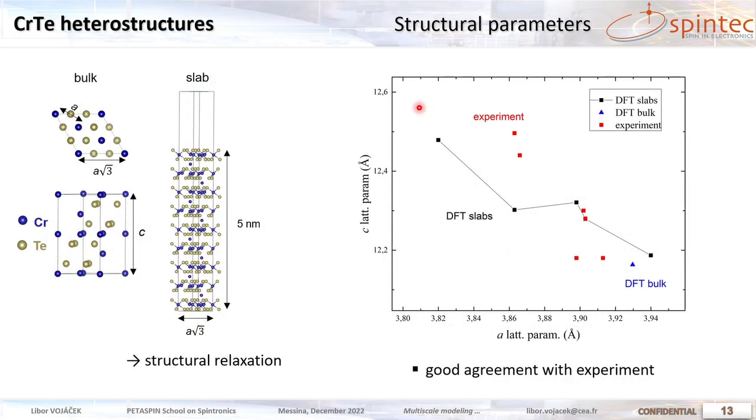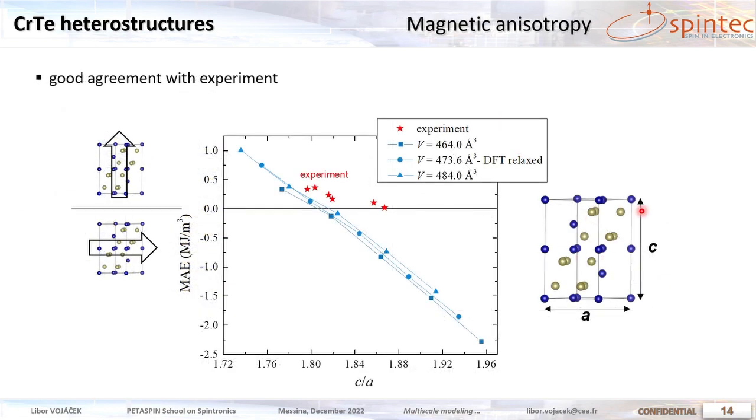First we construct a slab which is thicker. So here in X and Y there are periodic boundary conditions, so it's a thin film. And we relax the structure so we can get the C and A lattice parameters out of plane and in plane. And we compare with the experiment getting a very nice match. We can include the spin-orbit coupling and calculate the magnetic anisotropy and see how it varies with the strain. And again we see that at the relaxed bulk chromium telluride the anisotropy is perpendicular, so meaning out of plane, and this matches the experiment again.